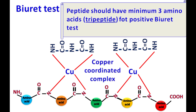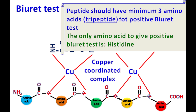It should be noted that peptides should have a minimum of three amino acids to give a positive biuret test. The only amino acid that gives a positive biuret test is histidine.